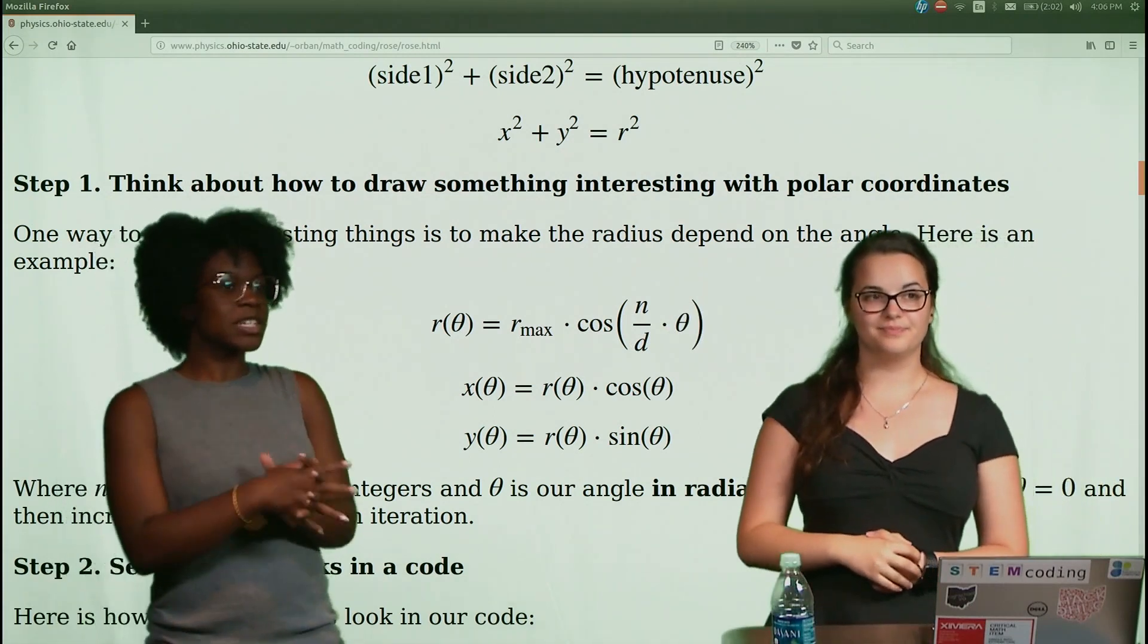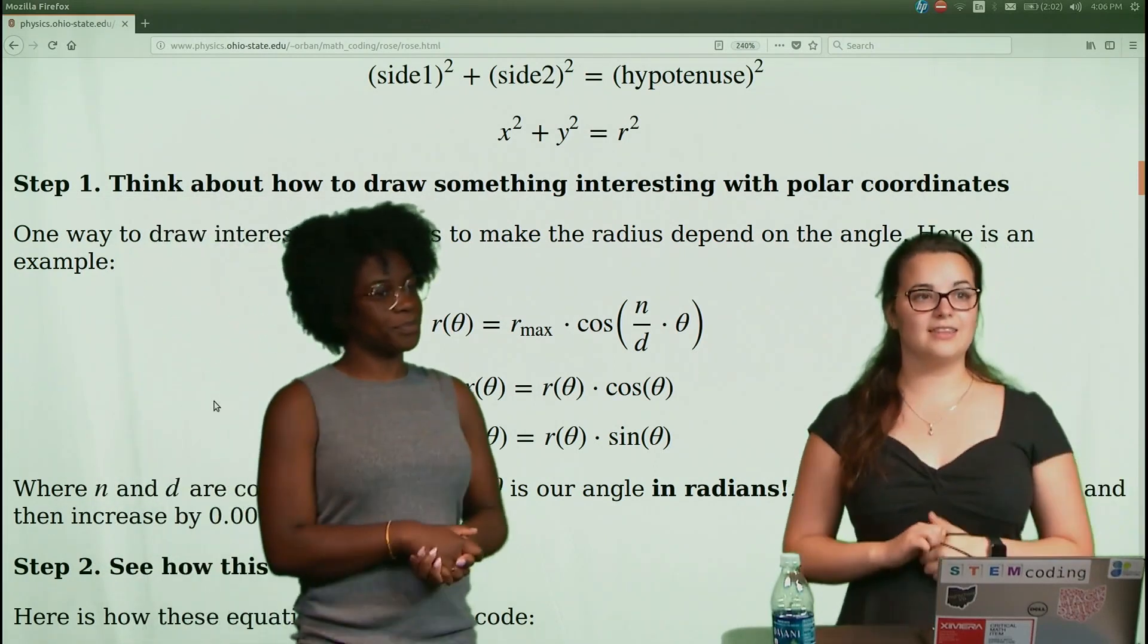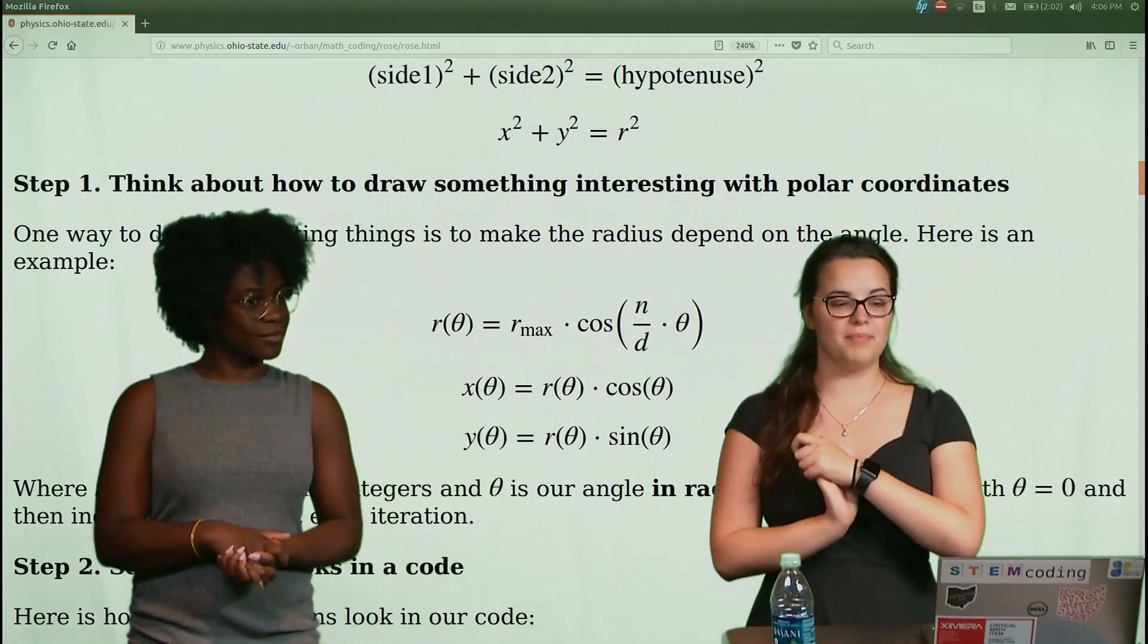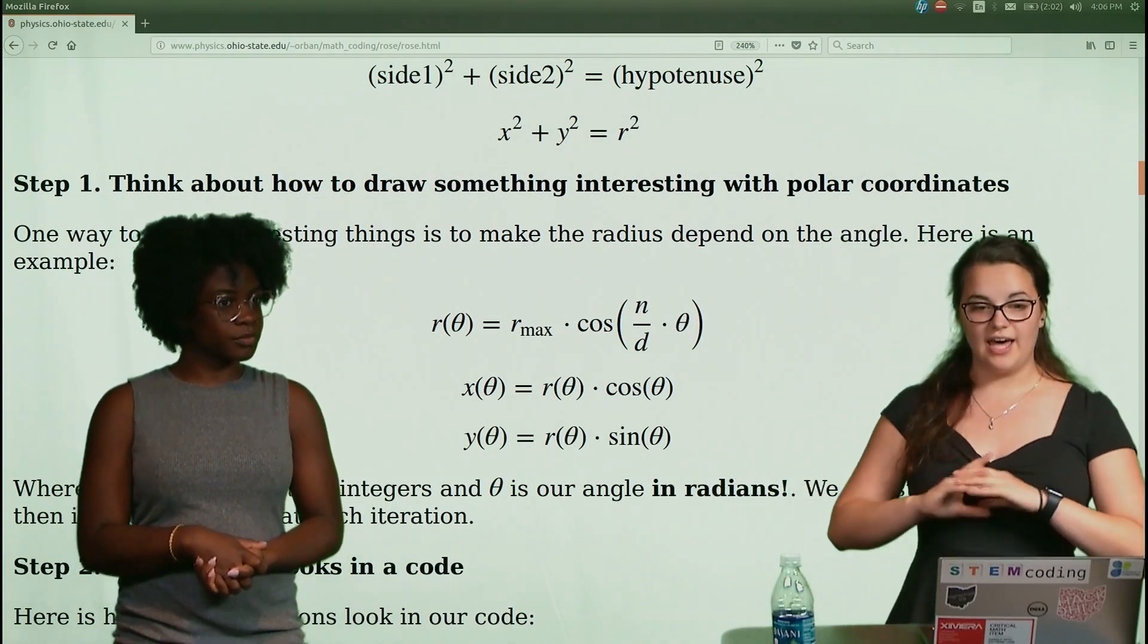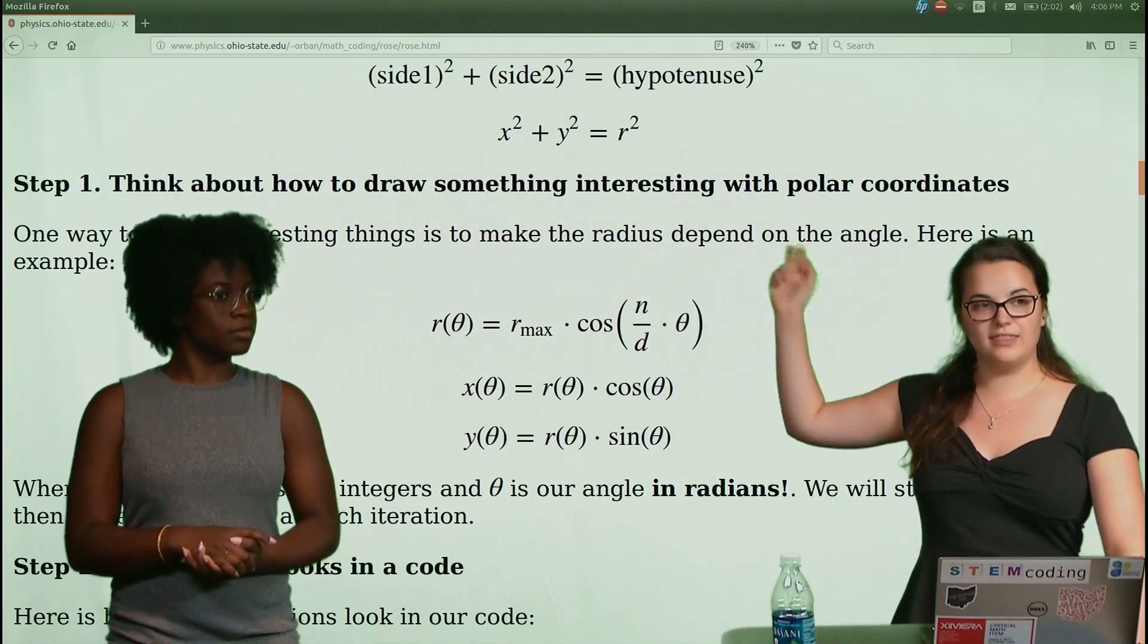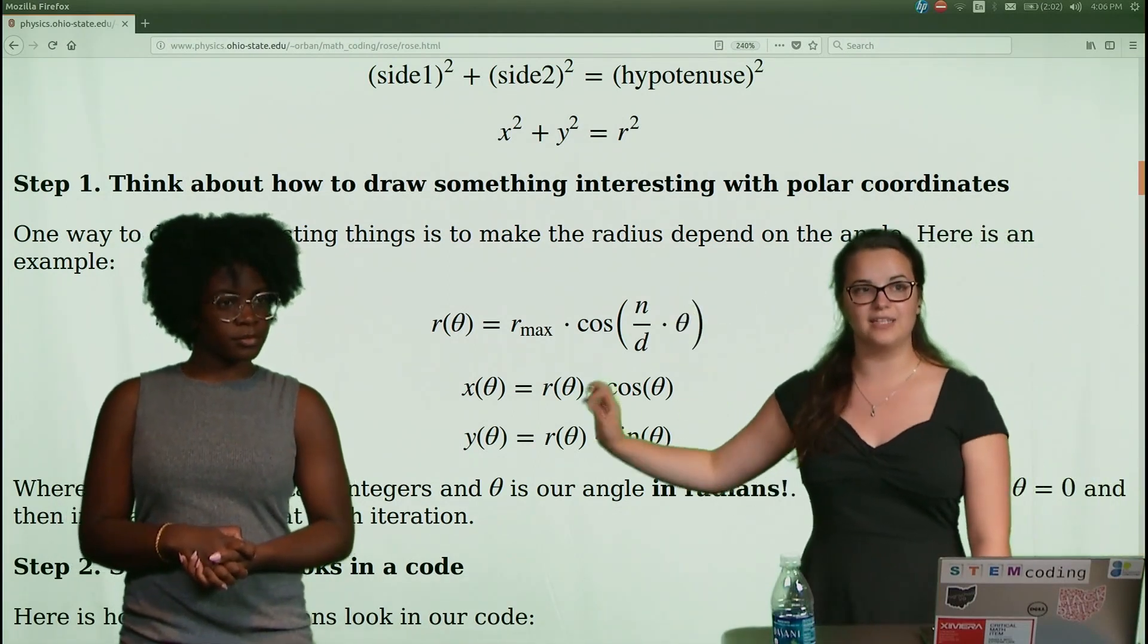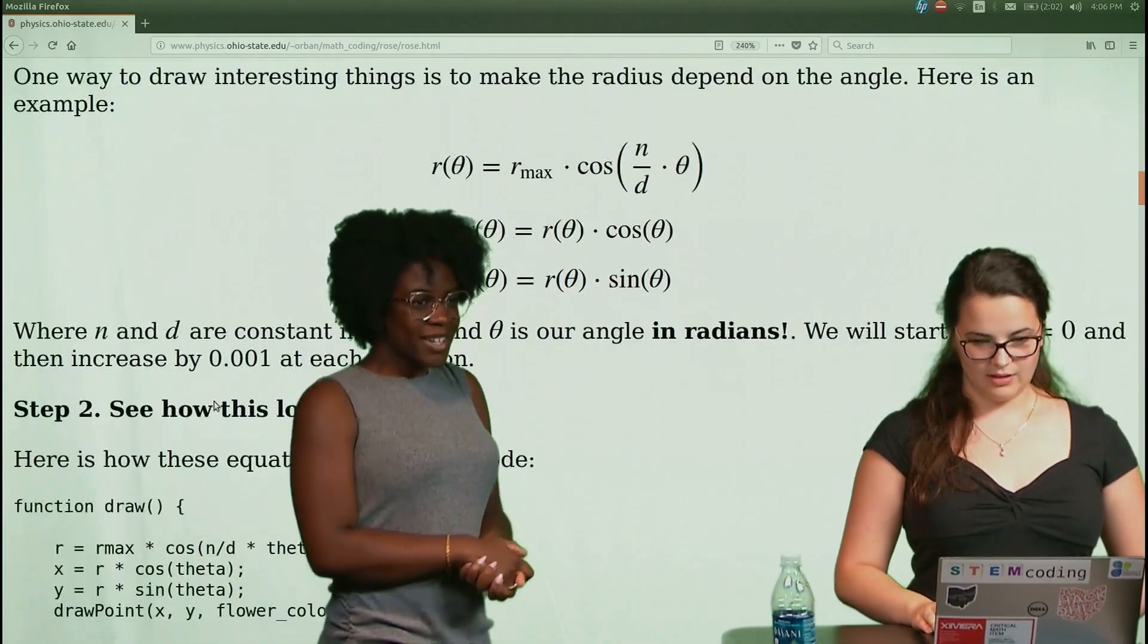Yup, and then we'll also be changing the parameters of N and D throughout the activity to see what kind of shapes we get. Ok, and as we go with that, we need to keep in mind that theta is gonna be in radians and not degrees. And we're gonna start with theta equal to 0 and each step that we make we're gonna be increasing it by a small increment. So yeah, let's see what we can create.